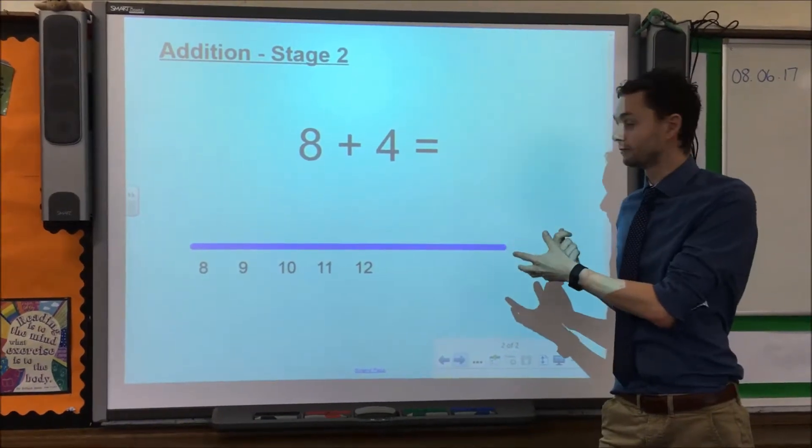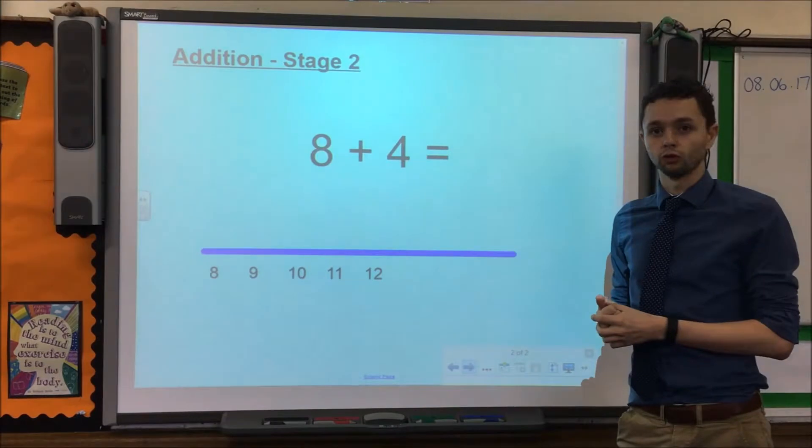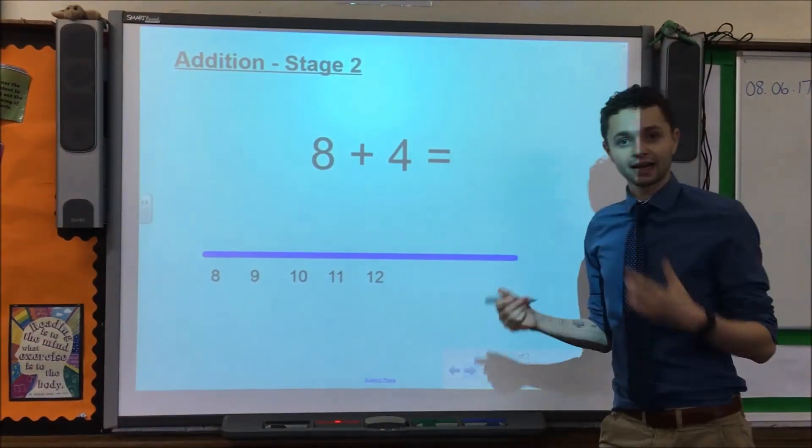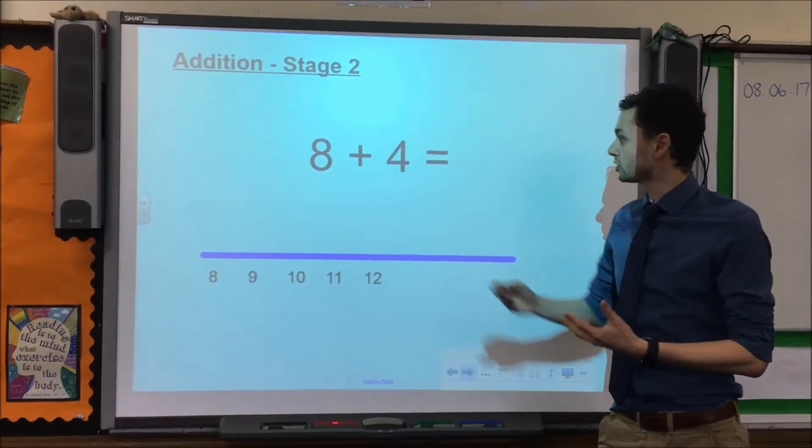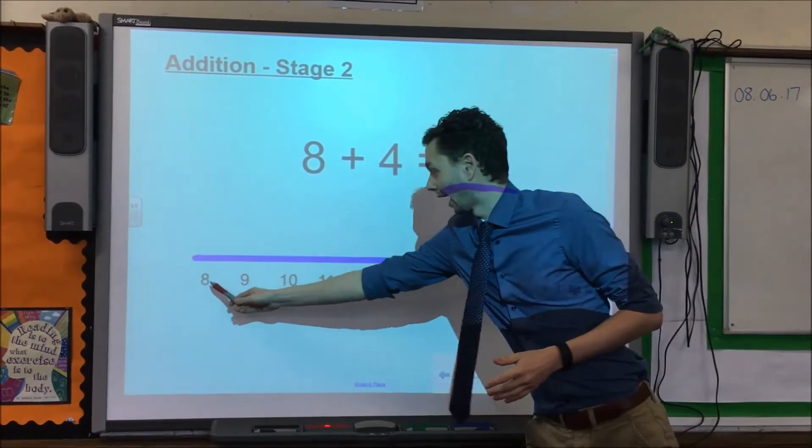Again, addition stage 2 involves children having a numbered number line, so as you can see the numbers are already in place. Exactly the same method as we've just used, we take the first number, 8, and we find it on the number line, 8.